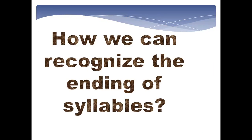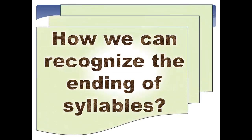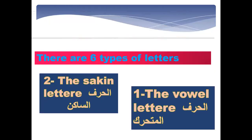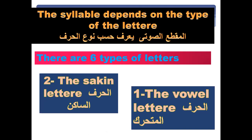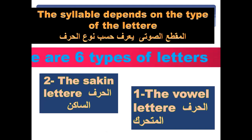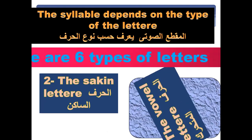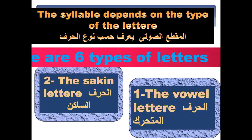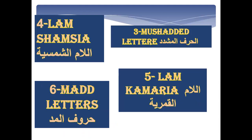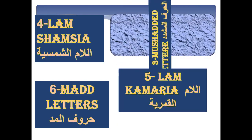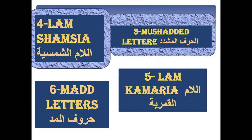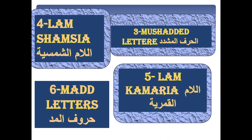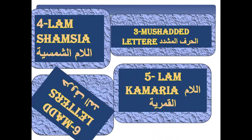How we can recognize the ending of syllables? The syllable depends on the type of the letter — Al-Maqata' al-Sawtiya tora'a hasab naw' al-harf. There are six types of letters: first, the vowel letter (Al-harf al-mutaharrik); second, the sakin letter (Al-harf al-sakin); third, the mushadad letter (Al-harf al-mushadad); fourth, lam shamsiya (Al-lamu al-shamsiya); fifth, lam qamariya (Al-lamu al-qamariya); sixth, mad letters (Huruf al-mad).